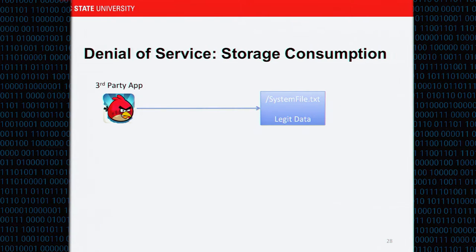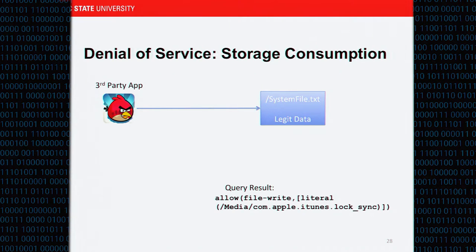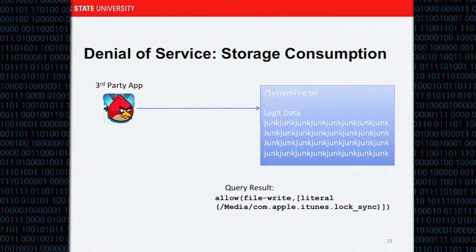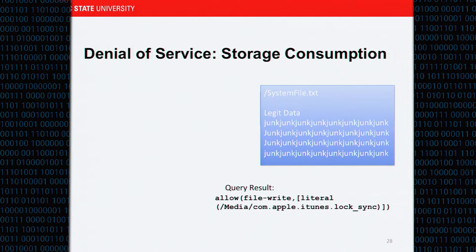The next category is denial of service. A third-party application can sometimes write to system files — a query result we found. With write access to about nine different paths, a third-party app can fill a system file with junk data until the iOS device has no space left. Once out of space, you can't do much with a phone. Furthermore, if you delete the application, the damage is still there — uninstalling an app doesn't fix which system files it tampered with.